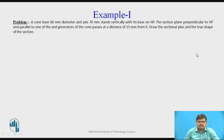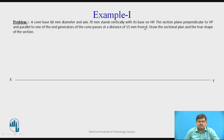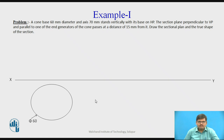Let us start by drawing. First, draw the XY line or the reference line. As the cone is resting on HP on its base, let us start with the top view by making a circle below XY with the base diameter of 60 mm. This is the 60 mm diameter base of the cone. Now divide this circle into equal parts — for this instance we have divided it into 8 equal parts, though you can divide it into 12 or more.